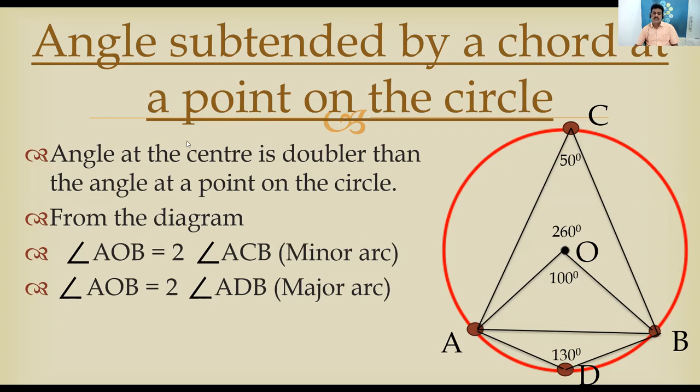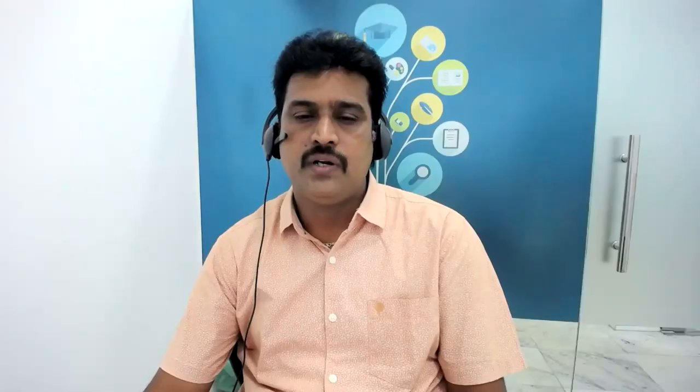I hope you understood. What we have learnt: first, angle subtended by a chord at the center of the circle; second, angle subtended by a chord at a point on the circle; and the relation between both — the angle at the center is double the angle at a point on the circle. Thank you so much for listening. Keep watching my channel. This is Srinivas from ZPHS Double Pool. Thank you, bye bye.